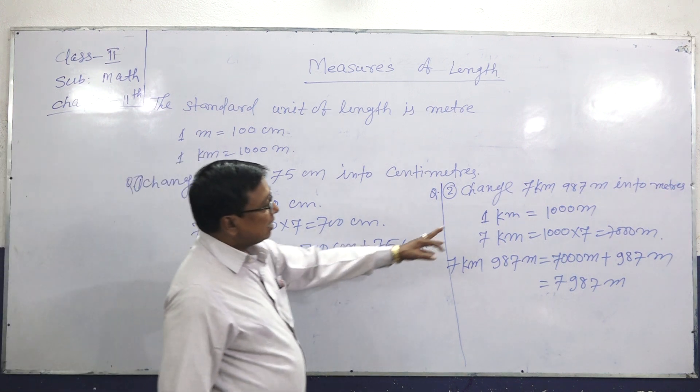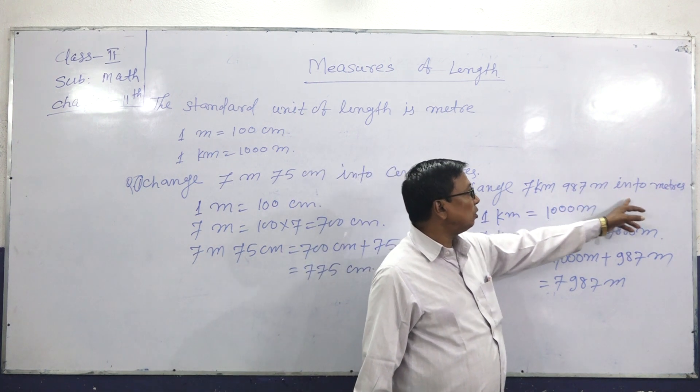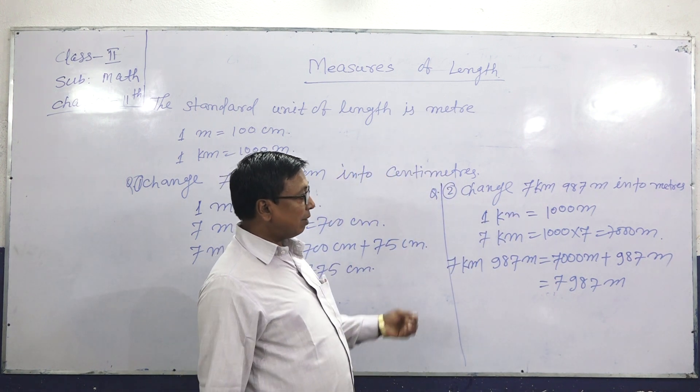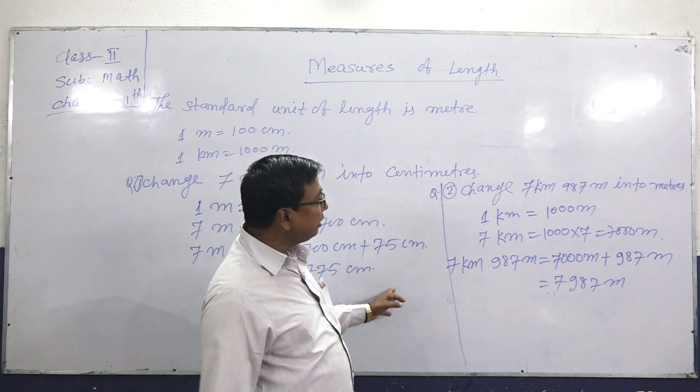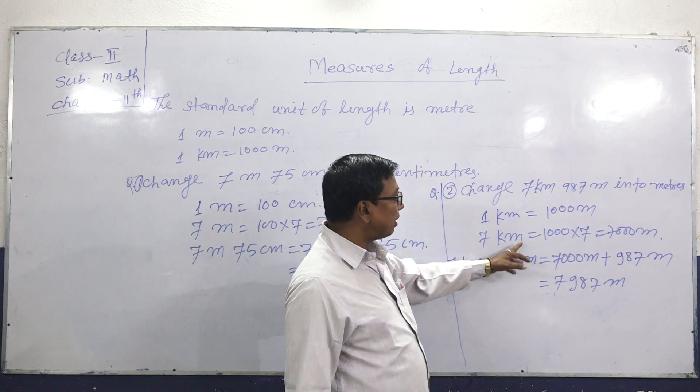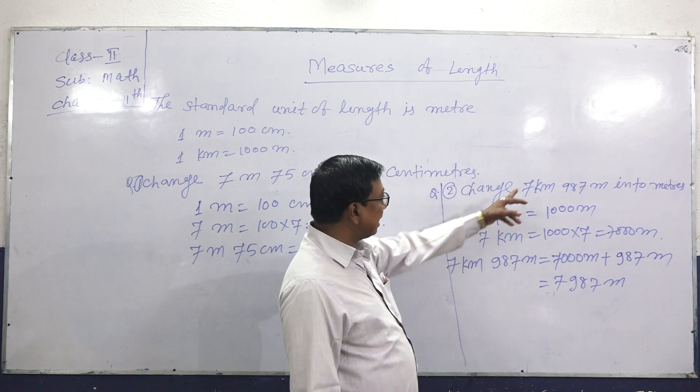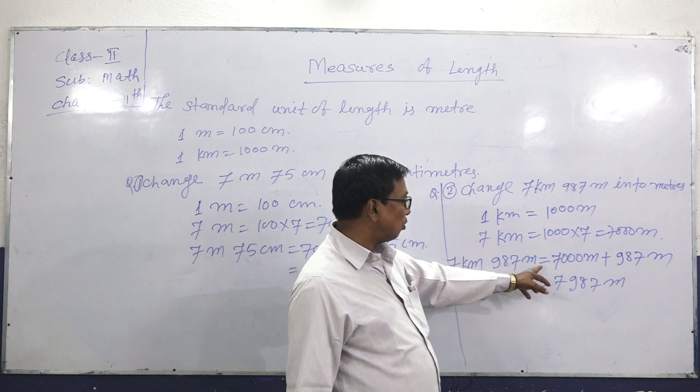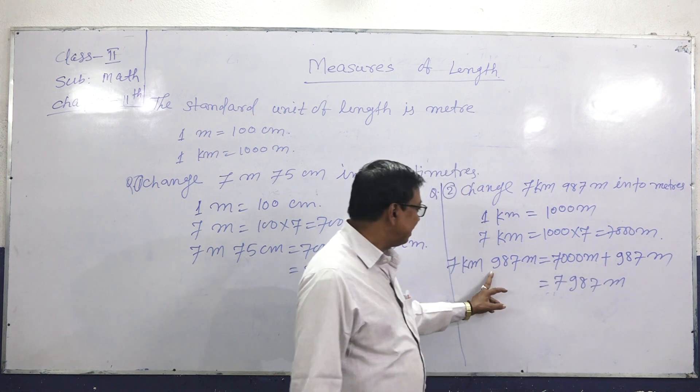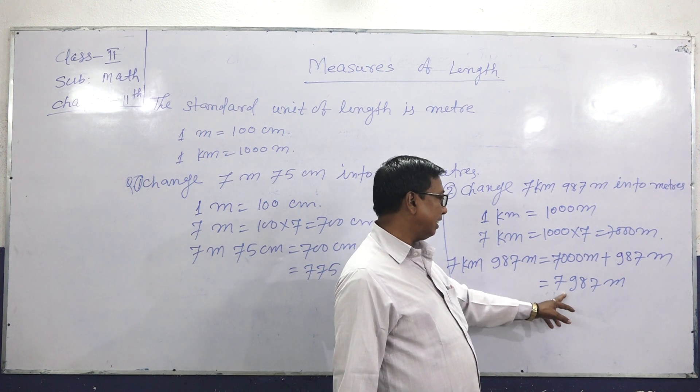Next question. Change 7 kilometers, 987 meters into meters. 7 kilometers equals 7,000 meters, plus 987 meters equals 7,987 meters.